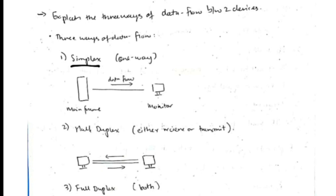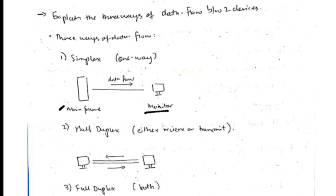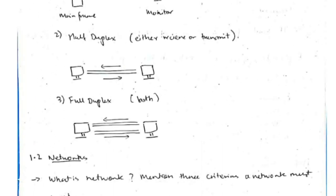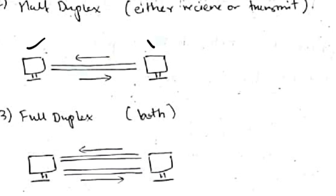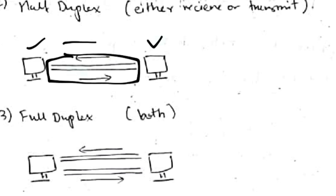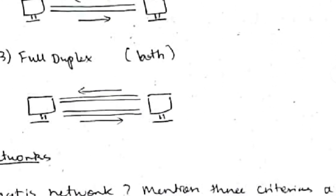There are three ways of data flow between two devices. First is simplex: data flows in only one direction, for example from a mainframe to a monitor. Second is half duplex: either receive or transmit can happen, but not both at the same time — like a one-way road. Two PCs communicating is an example. Third is full duplex: like a two-lane road, both sender and receiver can transmit and receive simultaneously.